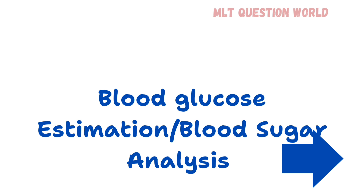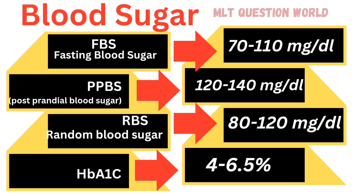Then we discuss blood glucose estimation. We have fasting blood sugar, postprandial blood sugar, RBS, and HbA1c. Fasting blood sugar is 70 to 110 milligram per deciliter. Postprandial blood sugar (PPBS) is 120 to 140 milligram per deciliter. Random blood sugar (RBS) is 80 to 120 milligram per deciliter. HbA1c, or glycated hemoglobin, is 4 to 6.5 percentage.